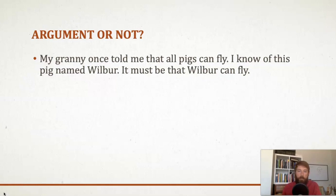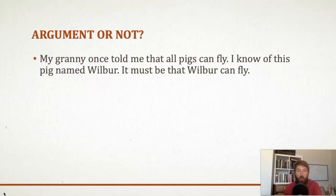How about this one? 'Granny told me all pigs can fly. I know a pig named Wilbur. It must be that Wilbur can fly.' Even though this is silly, it counts as an argument. We've got evidence — Granny told me that all pigs can fly — and a conclusion: it must be that Wilbur can fly. It meets both conditions. It has the evidential claim in that first statement, and there is also an inferential claim: if you accept that Granny is telling the truth, you should accept the conclusion. That inferential claim is explicit — 'it must be that' is an indicator word indicating a conclusion.